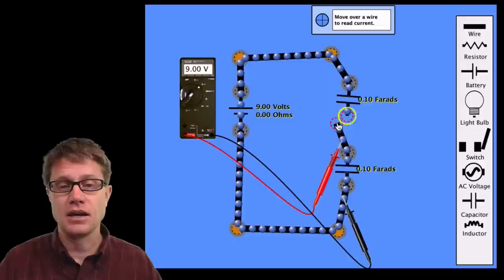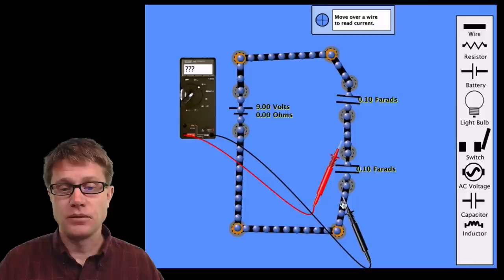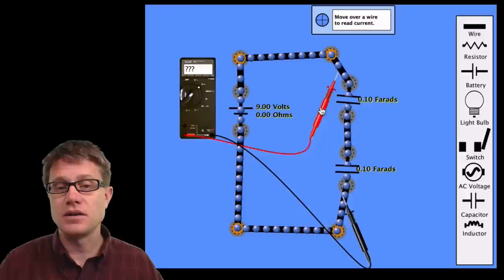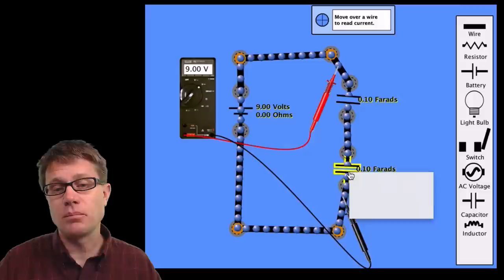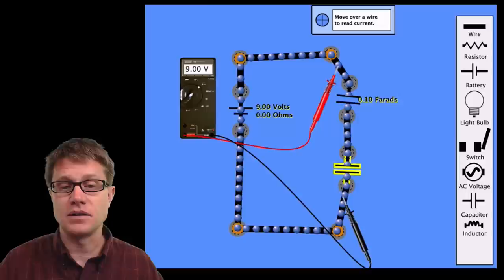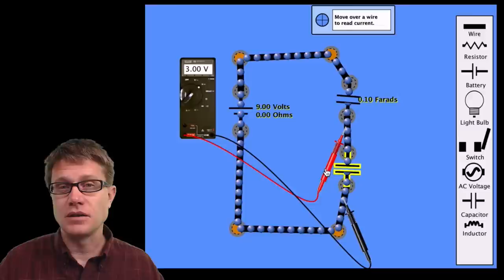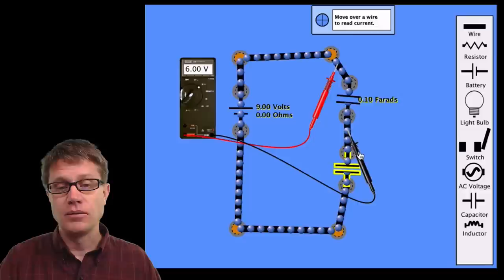If we put two capacitors in series, the voltage across each one depends on their capacitance. With the same capacitance, it is 4.5 volts on each. But if we change the capacitance of one — say, increasing it to 0.20 farads — the voltage on that larger capacitor is 3 volts and on the other it is 6 volts. That is the inverse relationship when looking at capacitors in series, because we are storing charge along that plate.